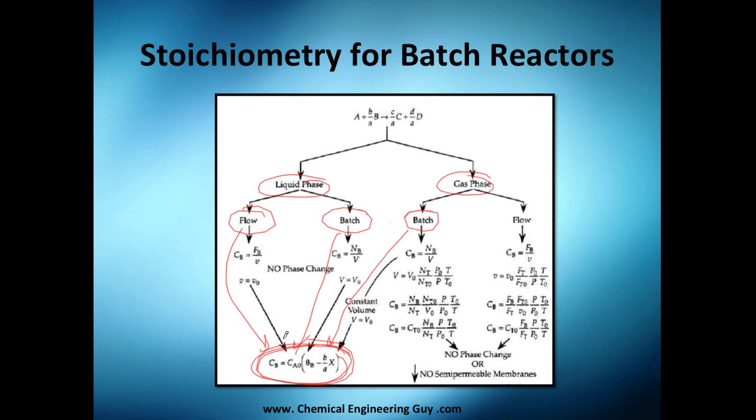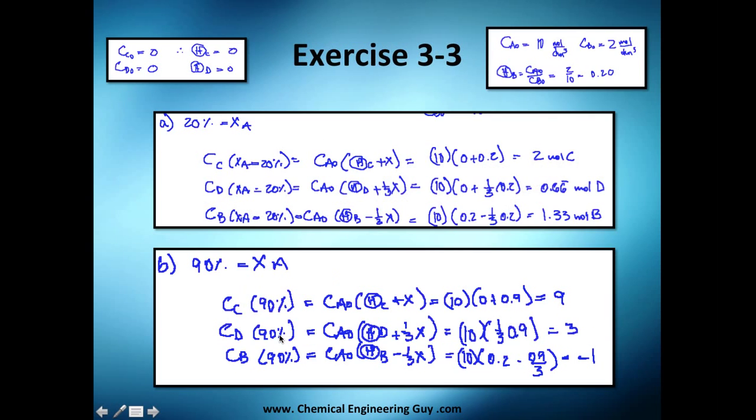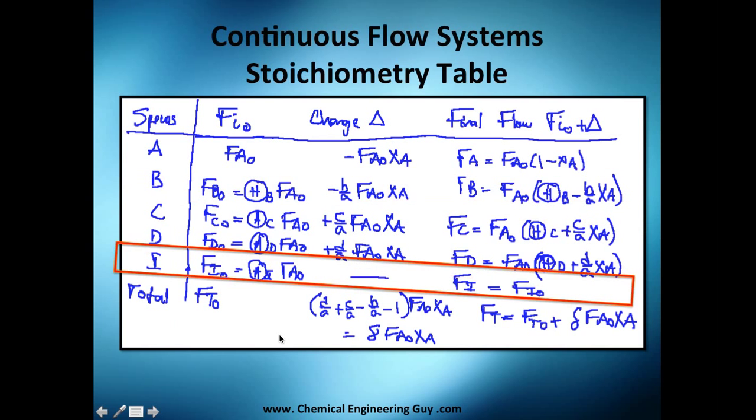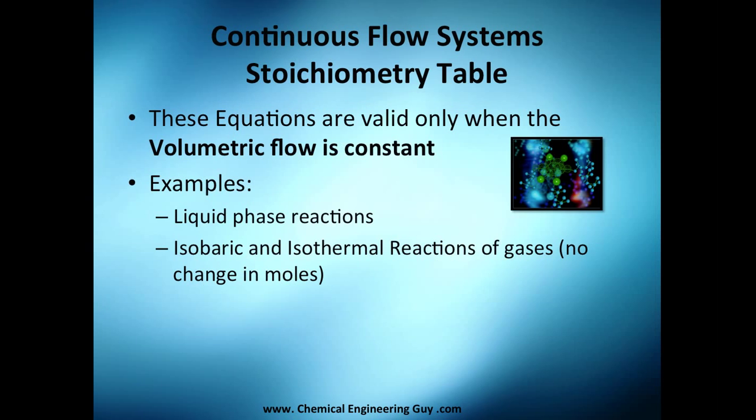You don't need to think anymore about this if it's liquid phase or not, or if it's batch or flow rate. You just need to calculate it. Now, these equations are only valid when volumetric flow rate is constant, so volumetric flow rate at the beginning is the same at the end. An example is for every liquid phase reaction we saw in the diagram before.